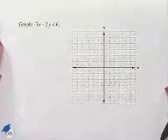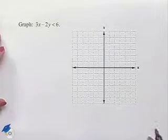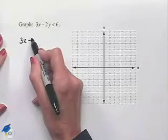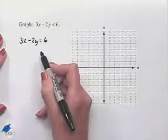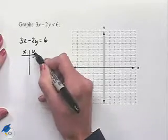Now let's graph a linear inequality. We want to graph 3x minus 2y is less than 6. We're going to start by graphing the equation 3x minus 2y equals 6. This will give us our border between two half planes. We can graph this line by using our intercept method.